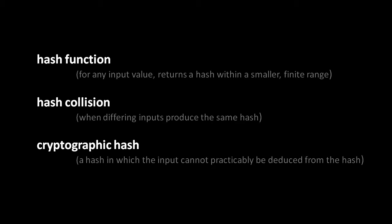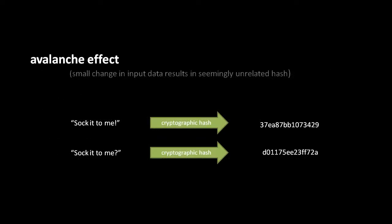What's called a cryptographic hash function is a hash function with special properties, including the property that, given a hash, you cannot, as a matter of practicability, find one or more inputs that produce that hash. Cryptographic functions also have what's called a strong avalanche effect, meaning that any small change to an input is going to result in a very different hash — one that doesn't seem to bear any relation to the other. For example, if we have two input strings — 'socket to me!' and 'socket to me?' — the two cryptographic hashes we get are totally different, with no apparent relationship and not even remotely close values.